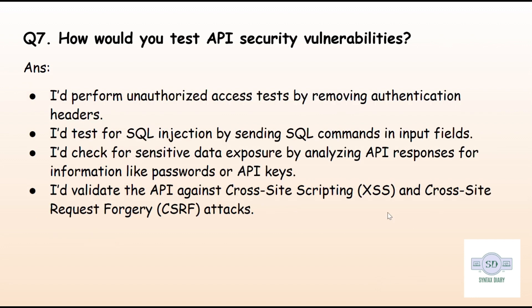The next question is: how to test API security? Security is super important in API testing. First, try sending requests without authentication — you should get a 401 Unauthorized response. Second, check for SQL injection by adding SQL queries in input fields. Third, check if the API leaks sensitive data like passwords or API keys. Fourth, test for cross-site scripting (XSS) and cross-site request forgery (CSRF) attacks.